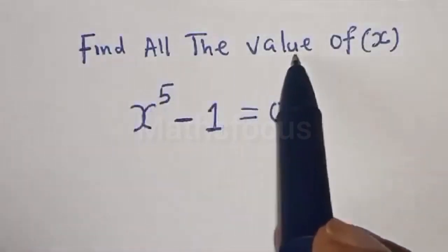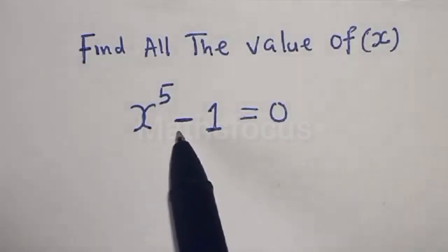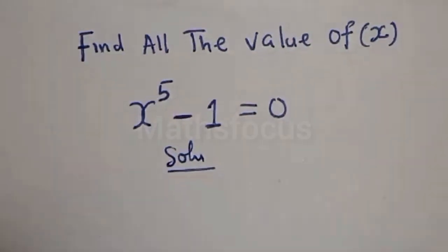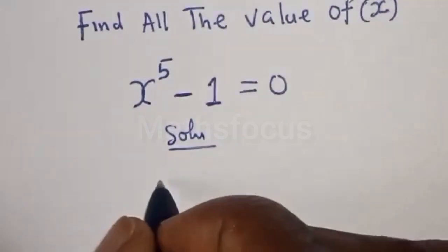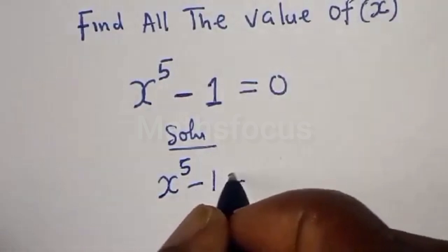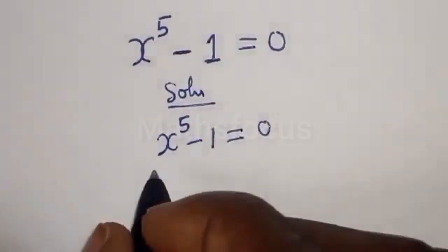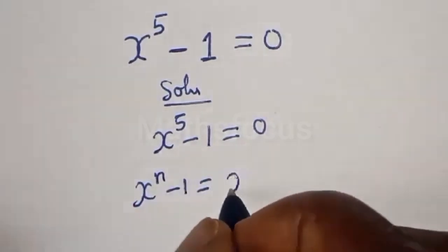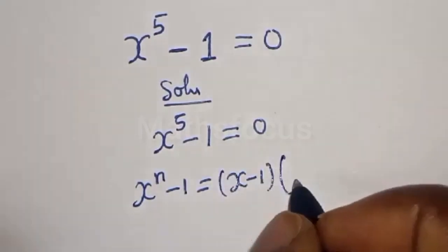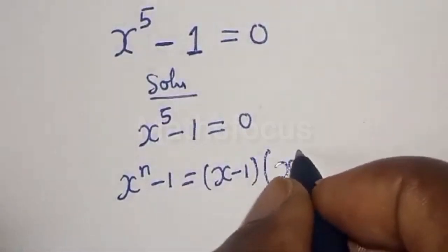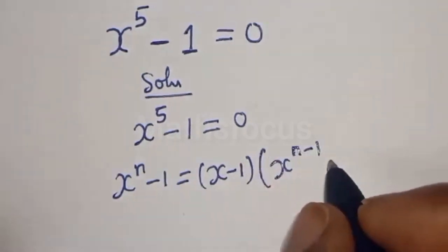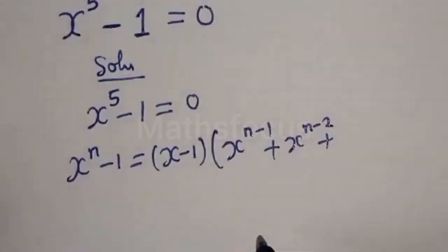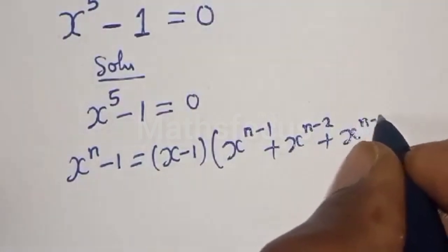Hello class, we want to find all the values of x from the given equation x raised to the power 5 minus 1 is equal to 0. Take note that if you have x raised to power n minus 1, this is equal to x minus 1 bracket x raised to power n minus 1 plus x raised to power n minus 2 plus x raised to power n minus 3 plus...